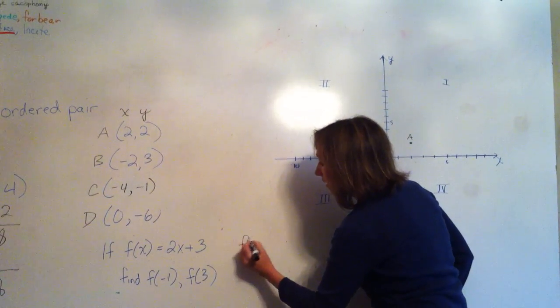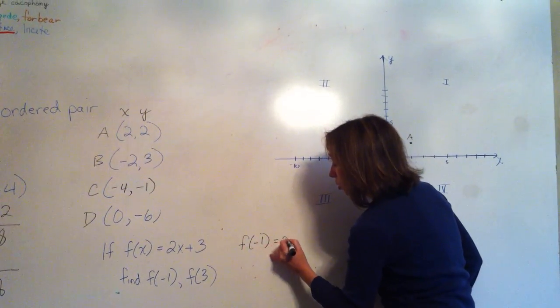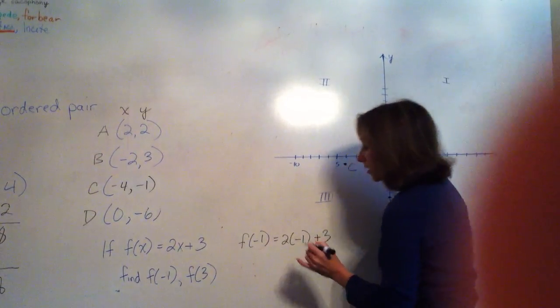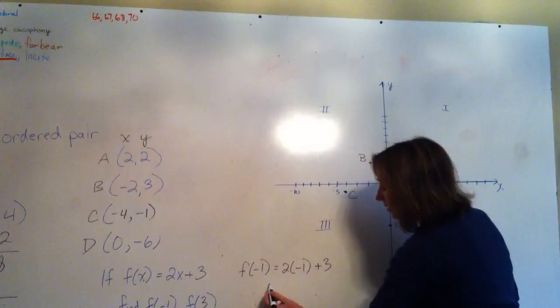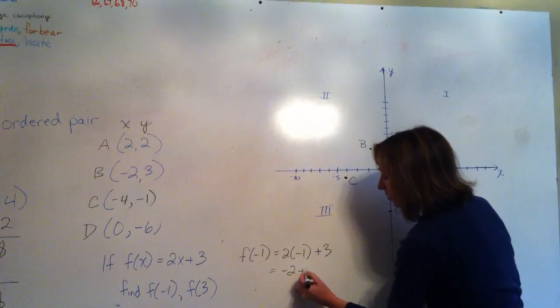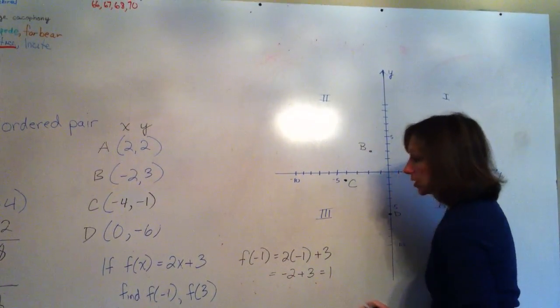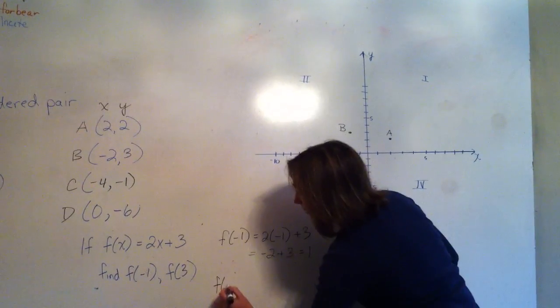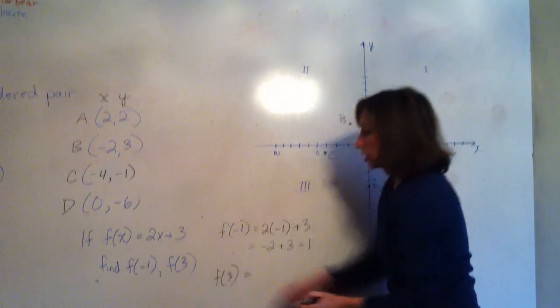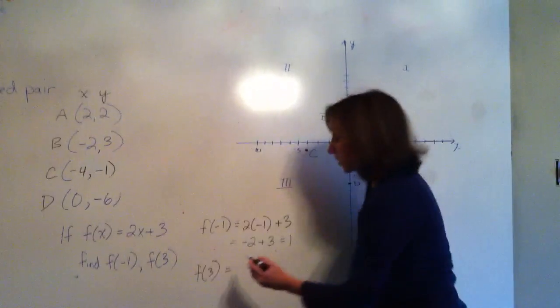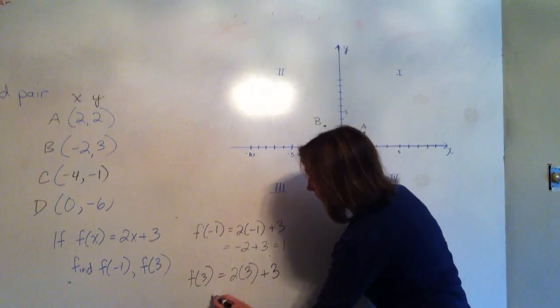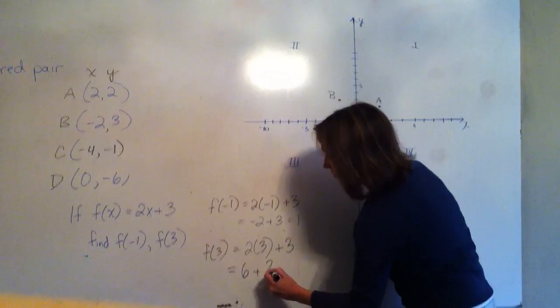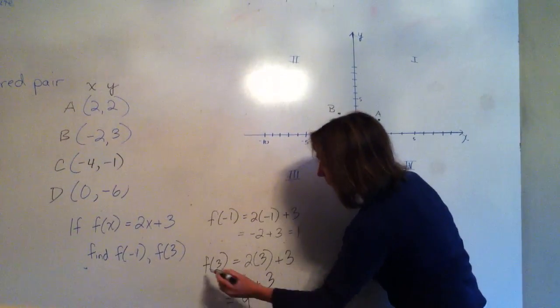So we're going to find f(-1) is just 2 times -1 plus 3. We just replace both x's with -1 and work it out. -2 + 3 = 1. And then we're going to find f(3). So we just put in a 3 for x. So we get 2 times 3 plus 3, which is 6 + 3. And our final answer is f(3) = 9.